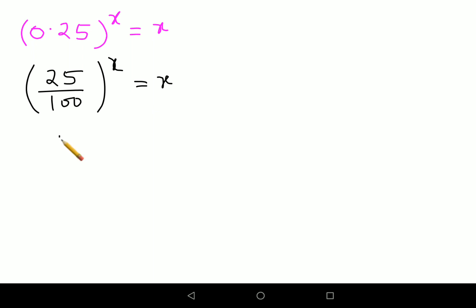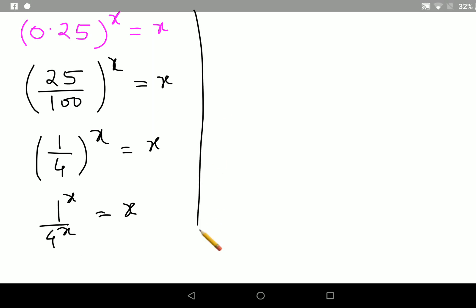So now this comes out to be 1 upon 4 the whole raised to x equals to x. Now we can also write this as 1 raised to x upon 4 raised to x equals to x. And we know that 1 raised to any number will always be 1. So we have 1 upon 4 raised to x equals to x.